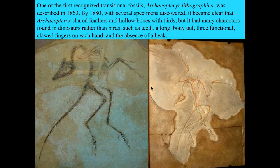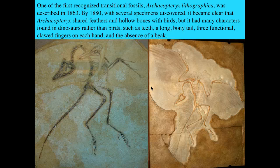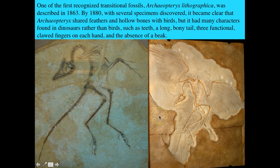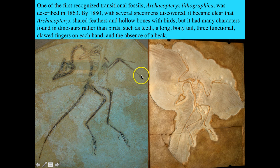Perhaps one of the most famous examples is Archaeopteryx lithographica, which was described in 1863. By 1880, there were almost a half a dozen specimens that had been found. Archaeopteryx was pretty clearly a transition between two things. It has extremely long digits with claws at the end on both the feet and on the hands. It has a long, bony tail. It has teeth — though it's difficult to see in these images. None of these features are very similar to birds.